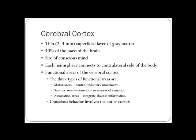The cerebral cortex is a thin two-to-four millimeter layer of gray matter on the outside, making up 40% of the brain's mass. This is where your conscious mind is — if damaged, you won't be conscious or able to perform higher thinking. Each hemisphere connects to the contralateral side of the body: the left hemisphere controls the right side, and vice versa.